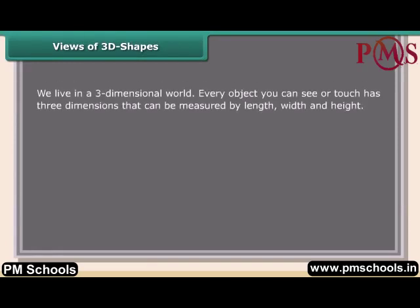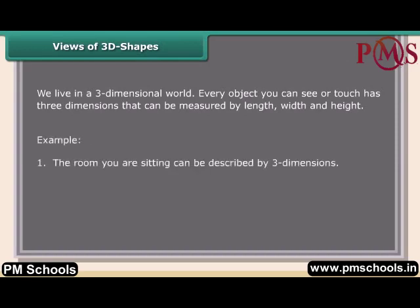Views of 3D shapes: we live in a three-dimensional world. Every object you can see or touch has three dimensions that can be measured by length, width, and height. For example, the room you are sitting in can be described by three dimensions, and the monitor you are looking at also has three dimensions.